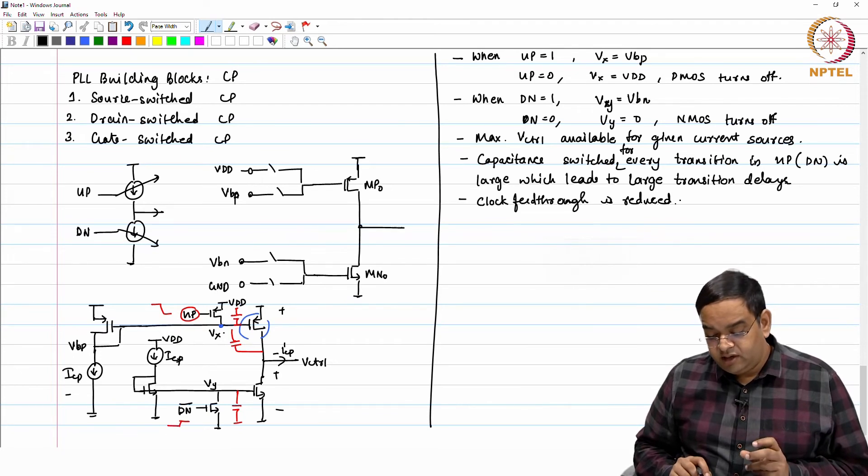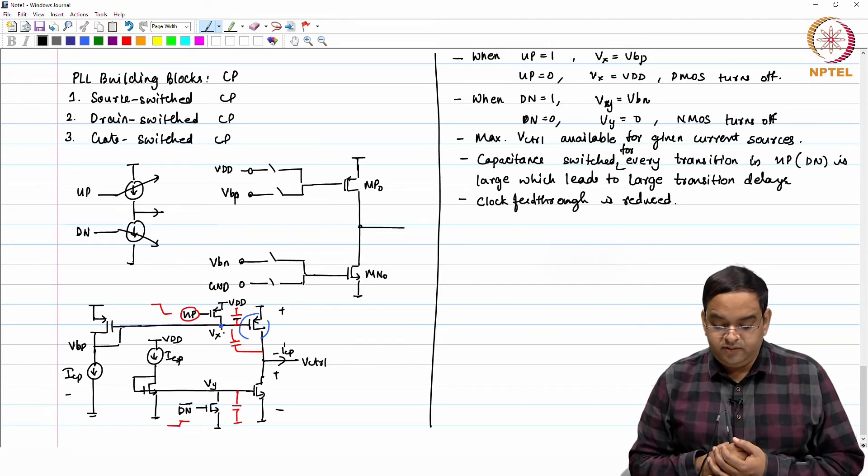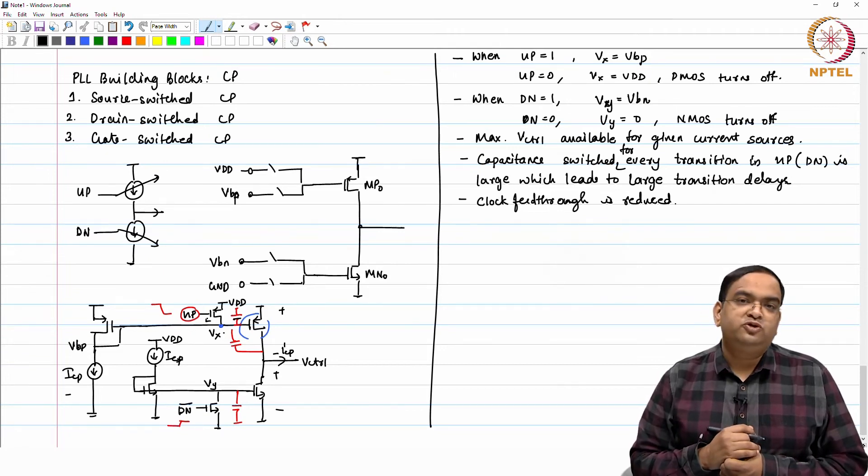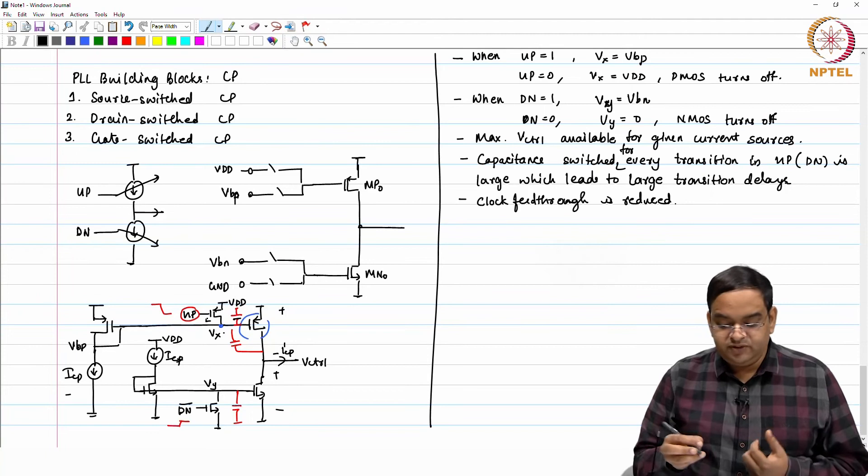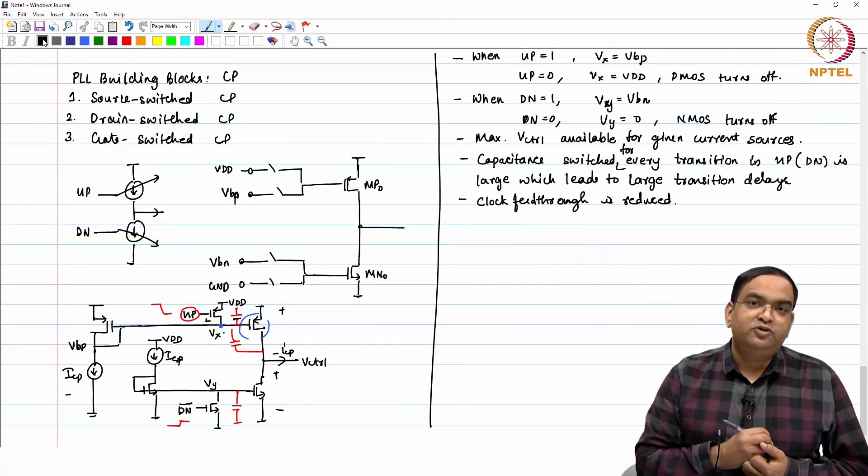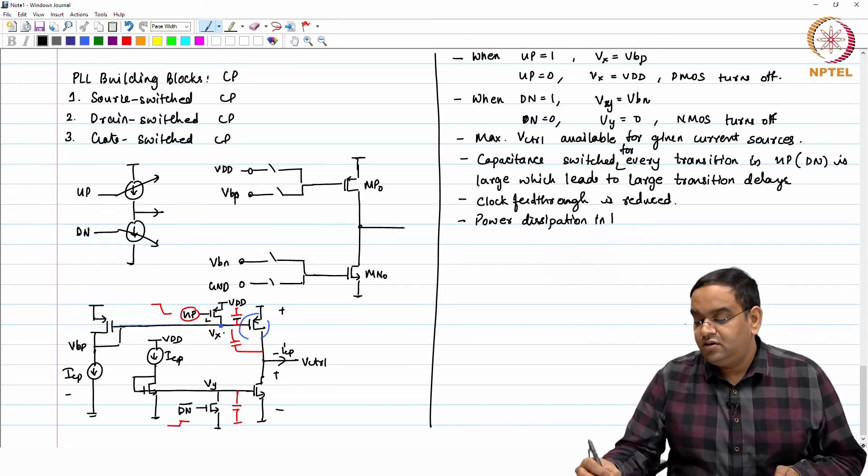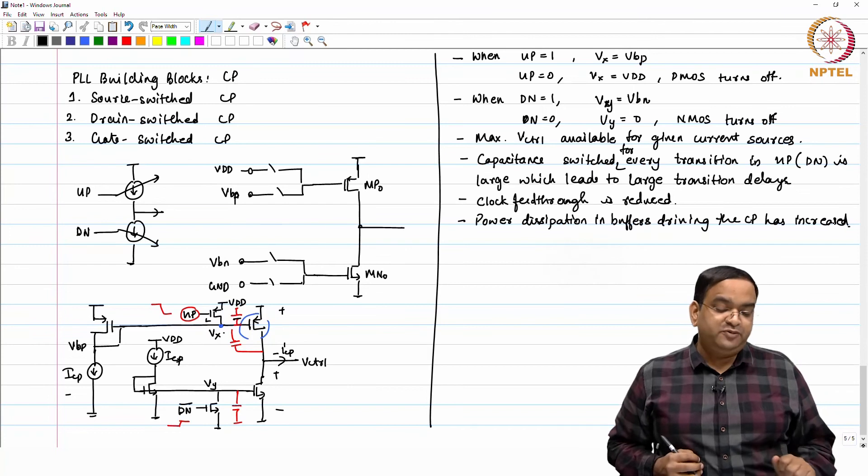When you are changing this gate voltage from VDD to VBP, if you want to make it fast then your switch sizes which are helping you to do so, those switch sizes have to be large and if your switch sizes are large then the buffers which are going to drive these switches they will also consume a lot of current. Power dissipation in buffers driving the charge pump has increased as compared to your drain or source switch charge pump.